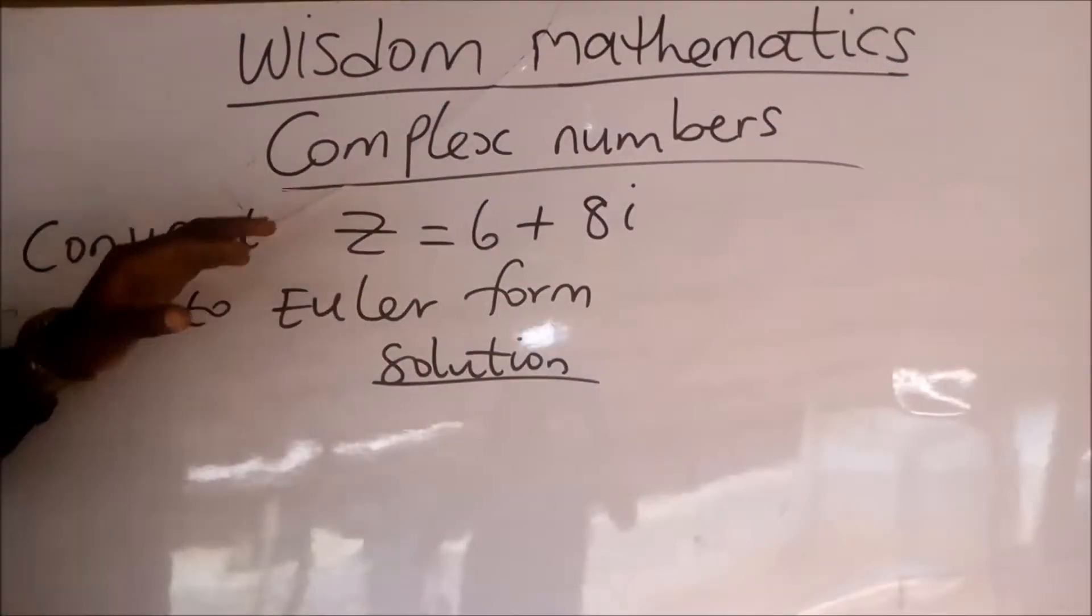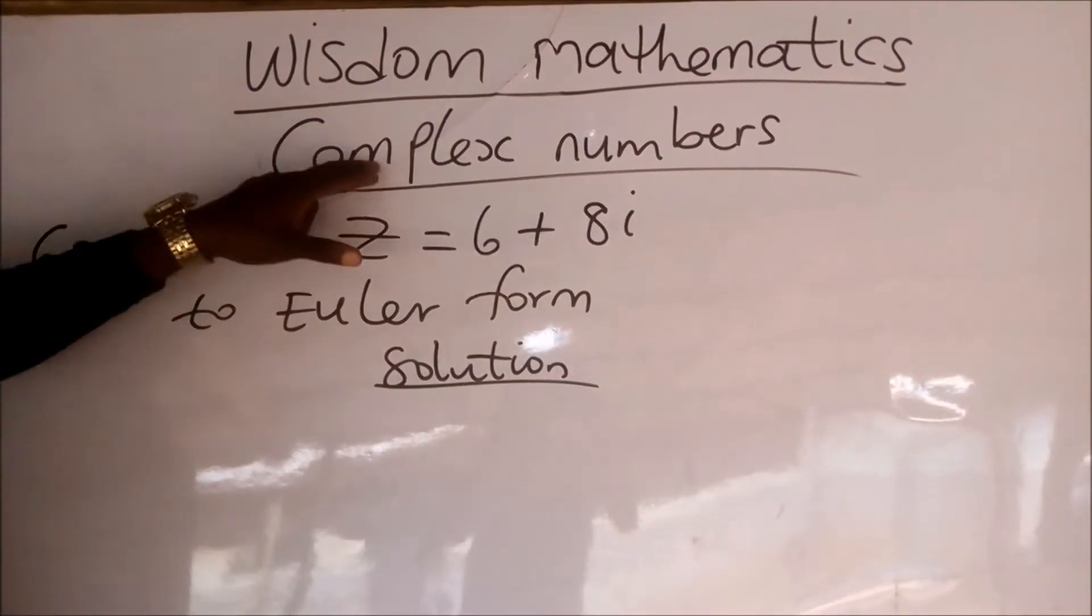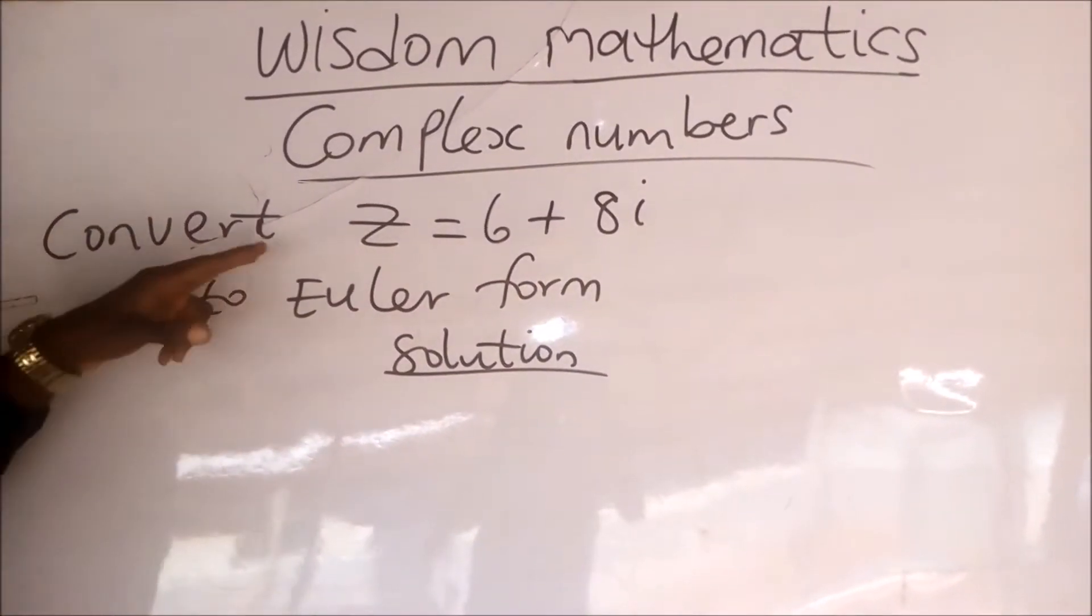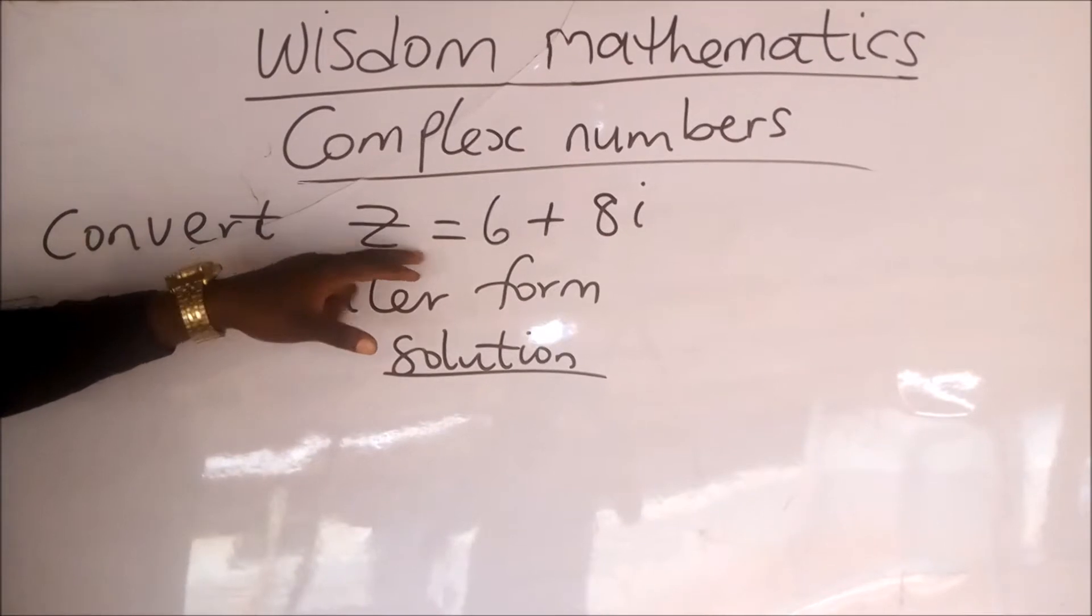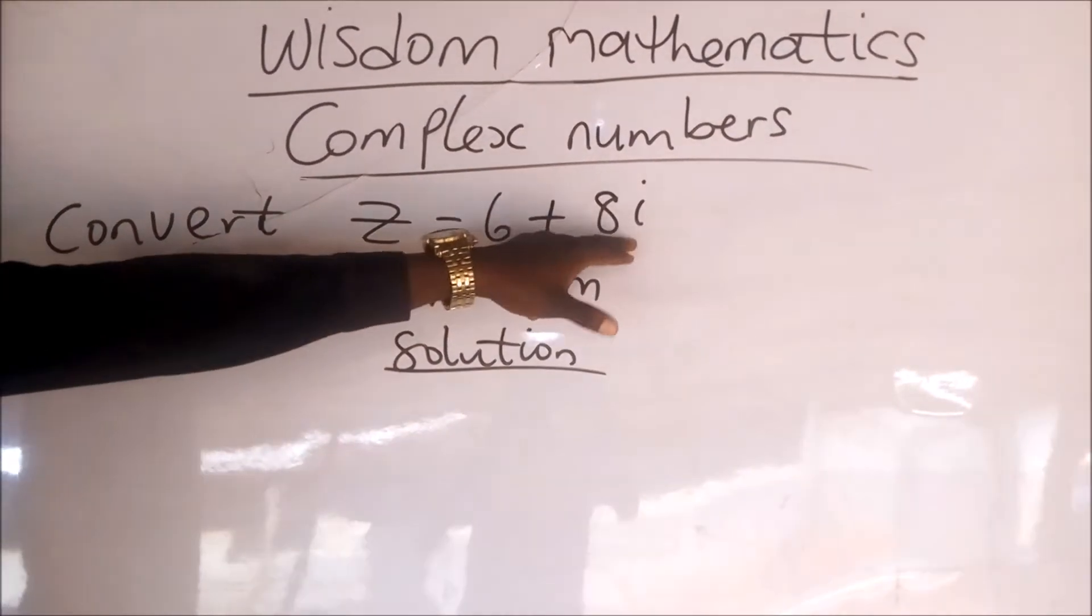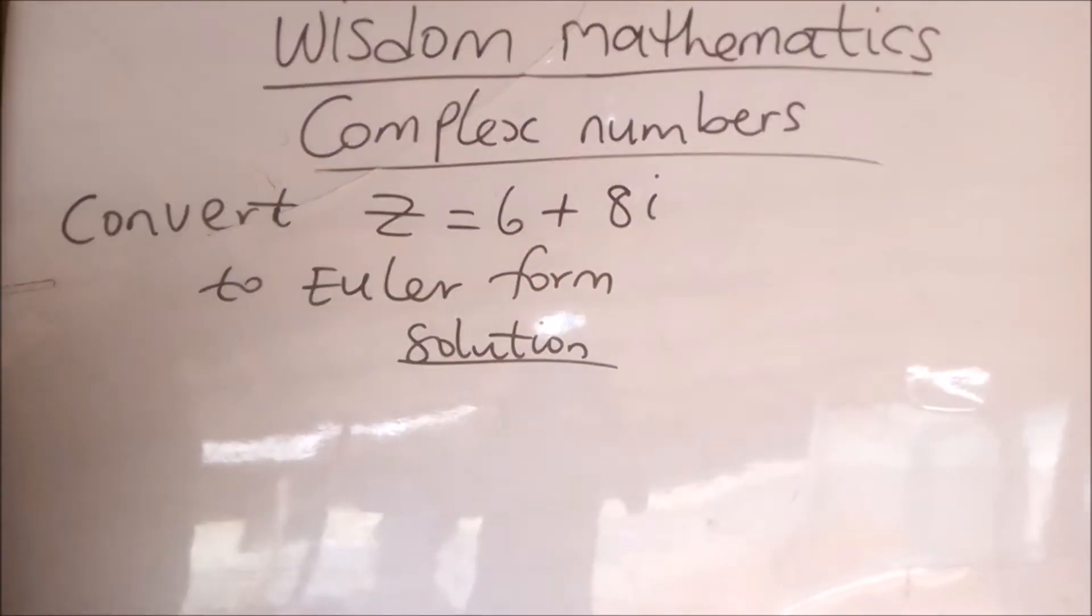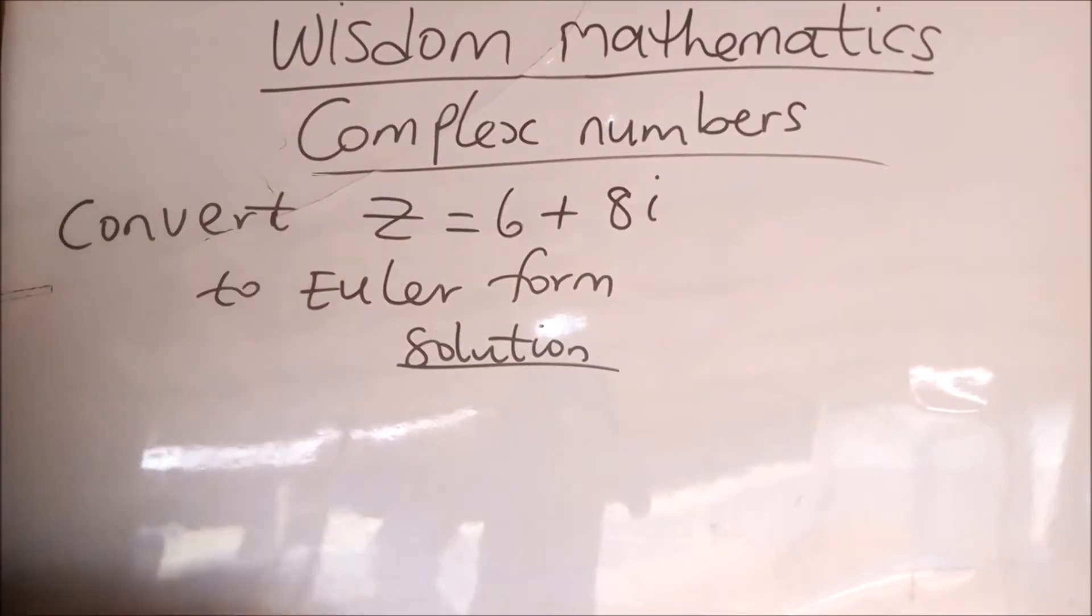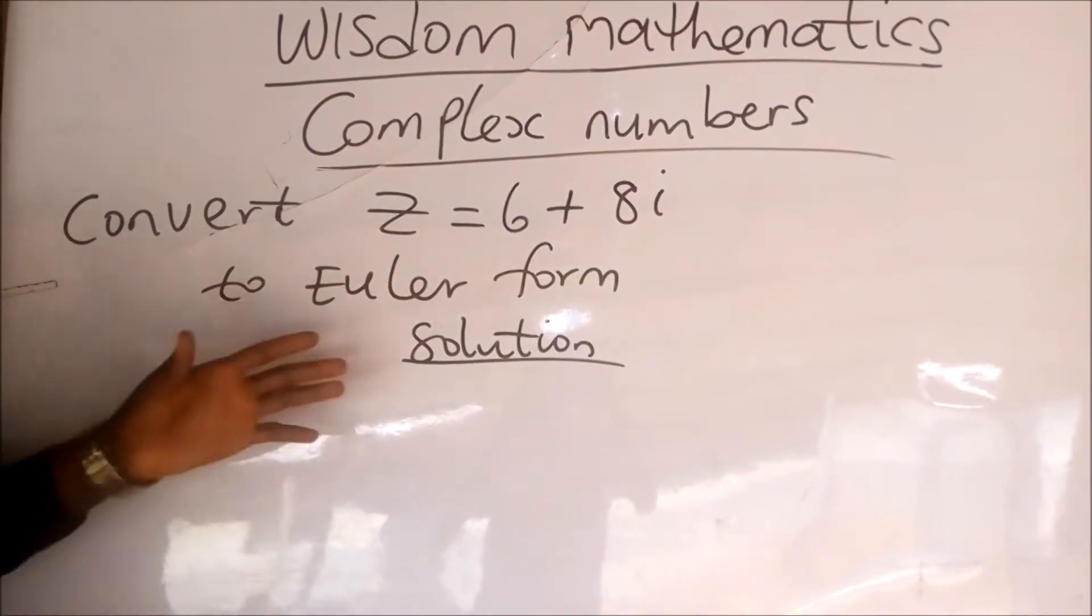This episode on Wisdom Mathematics tutorial on complex numbers, we have a question which says convert the complex number 6 plus 8i to Euler form. In our previous videos on complex numbers, we have talked about different forms of a complex number, which one of them is Euler form.